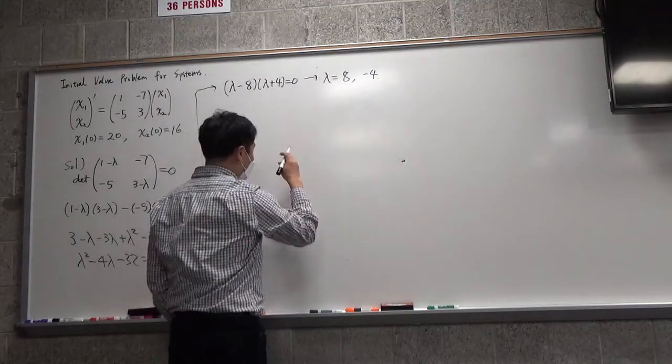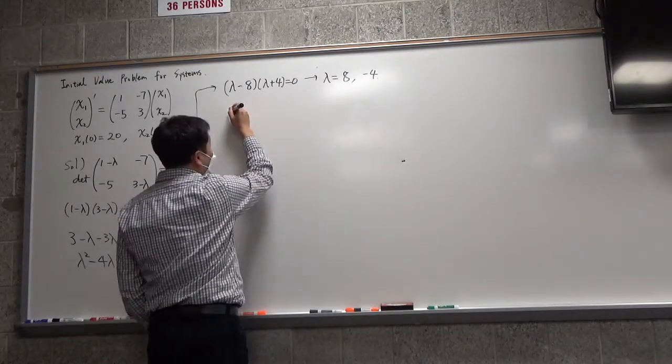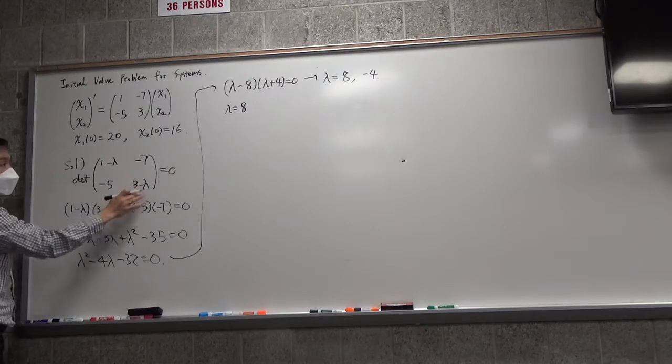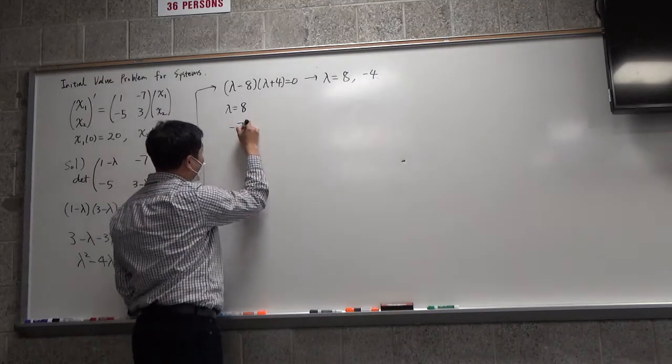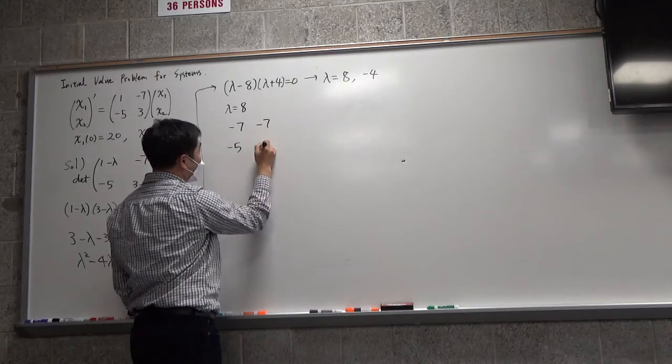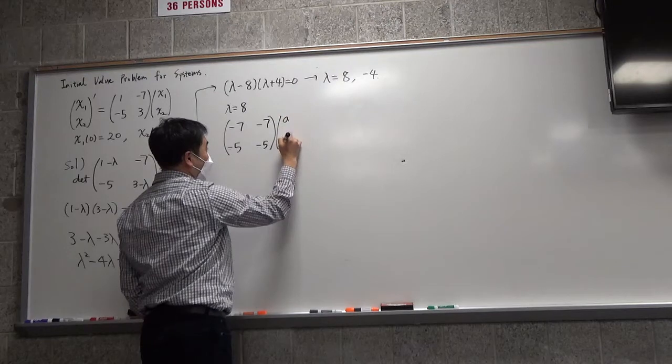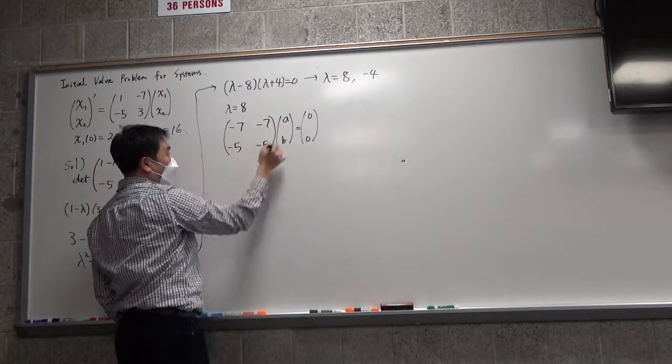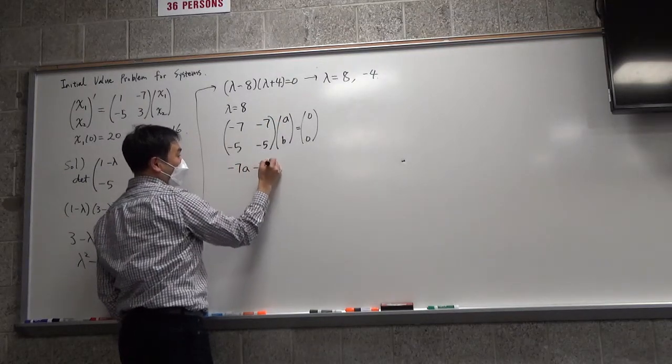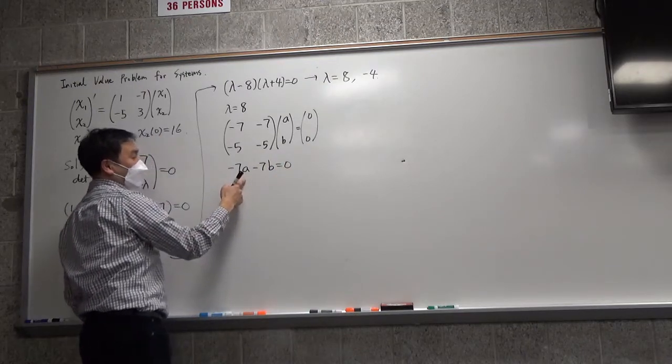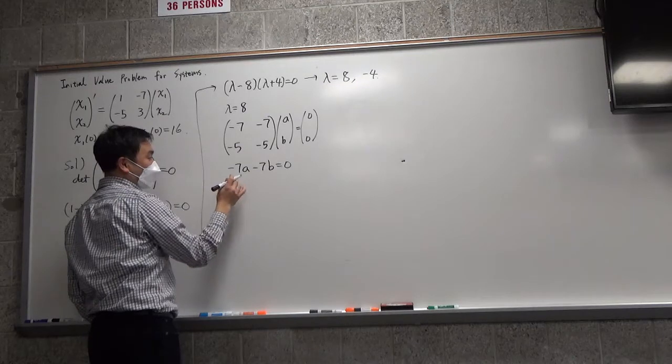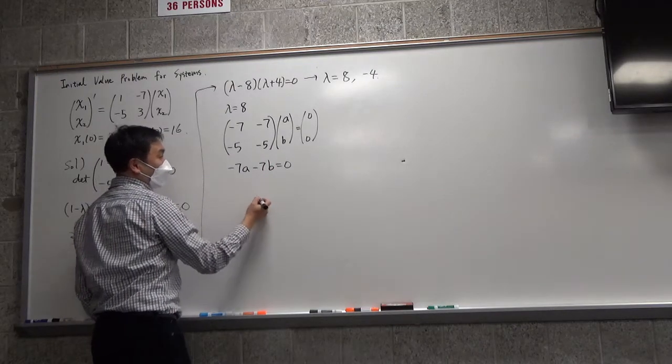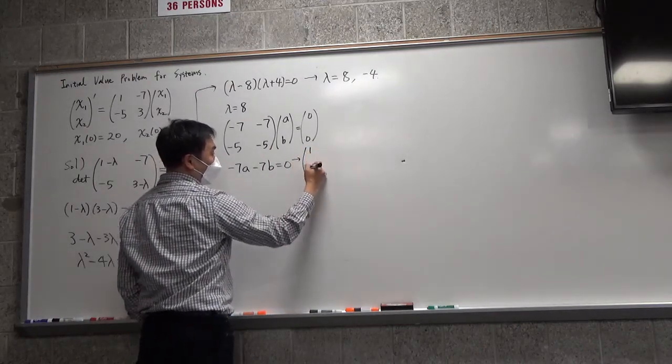Okay, now let's find the eigenvectors. So first, when lambda is 8, you plug in 8 here and here. 1 minus 8 will be negative 7, negative 7, negative 5, negative 5, some column vector AB equals 0, 0. The very first line gives you negative 7A minus 7B equals 0. So if you plug in 1 into A, you're going to get B as negative 1. So here we see that the eigenvector is 1 and negative 1.